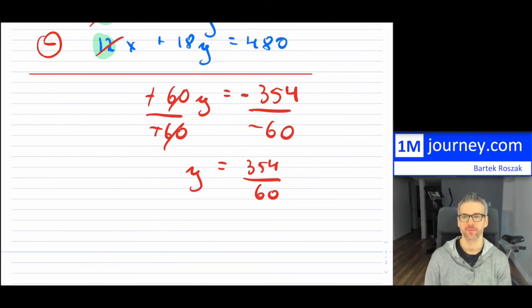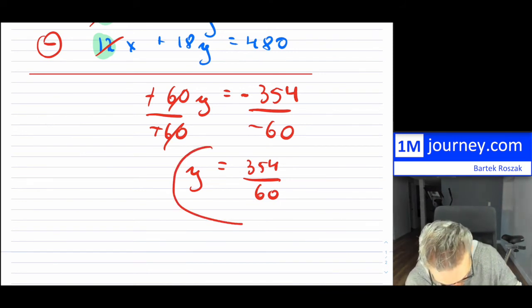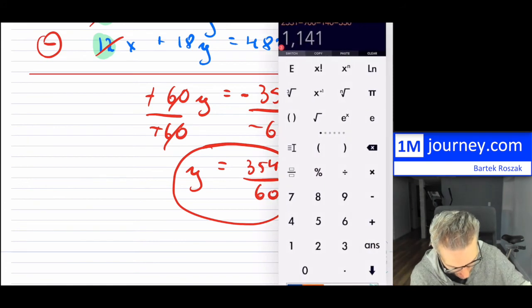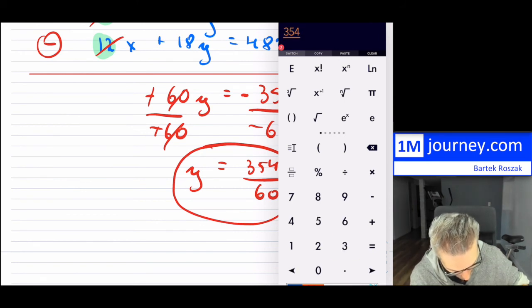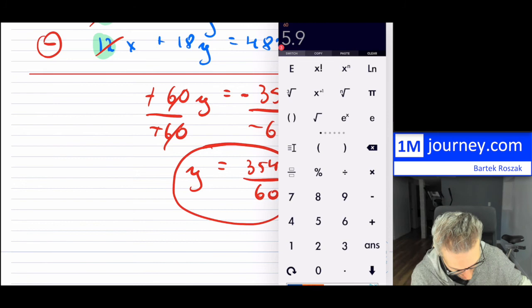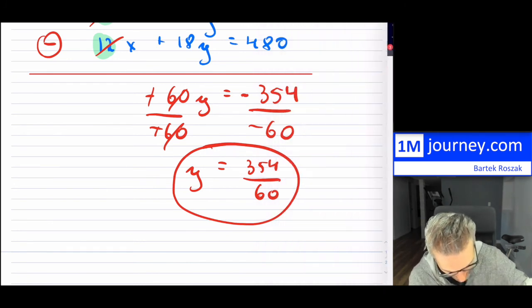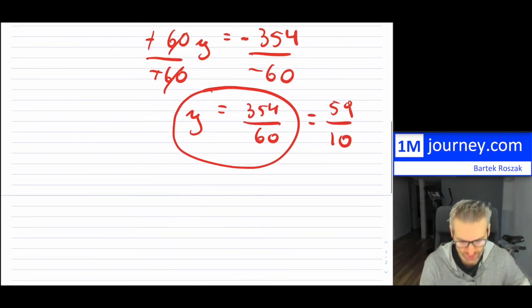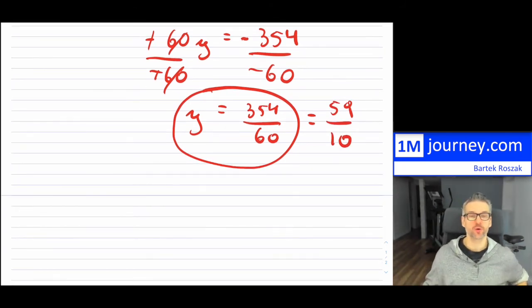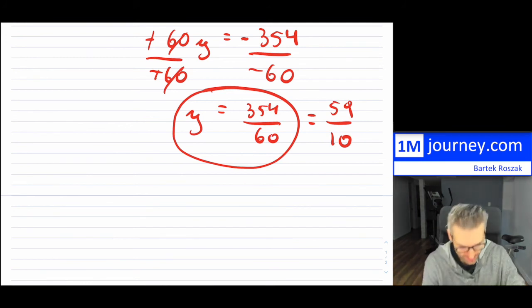Now once you have your y, so whatever this is, now I'm going to cheat here a little bit because I'm going to reduce this all the way down. So 354 over 60, so it's 5.9 which is 59 over 10. So that would have been in reduced form. Again I don't know if they want you to keep it in decimal or not. If it is you can put it as 5.9. So this would have been 5.9 if it was just a decimal.